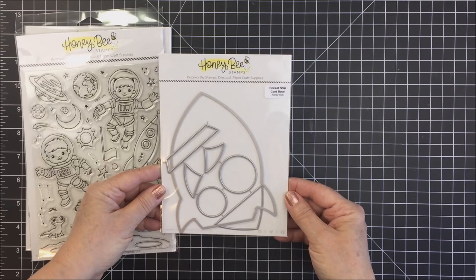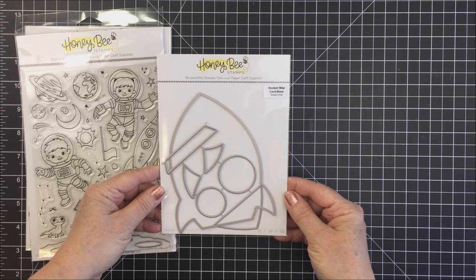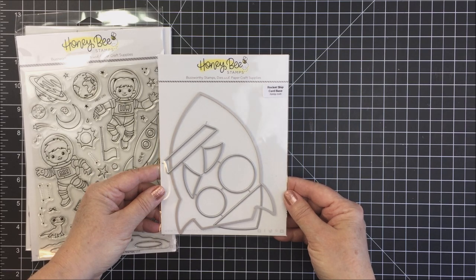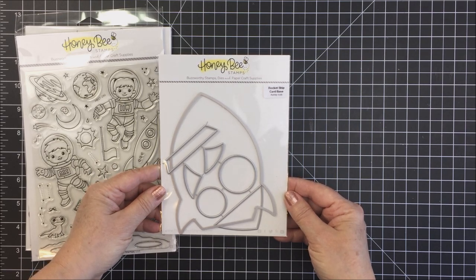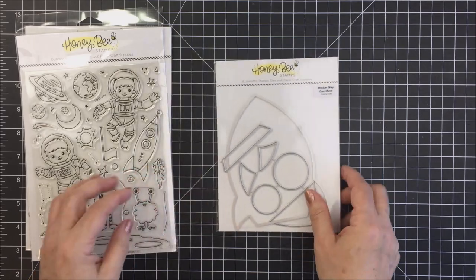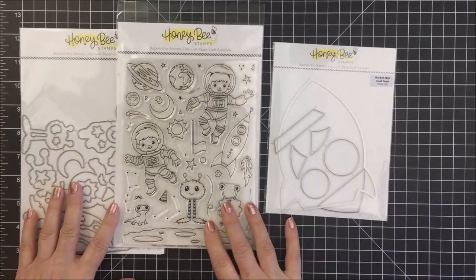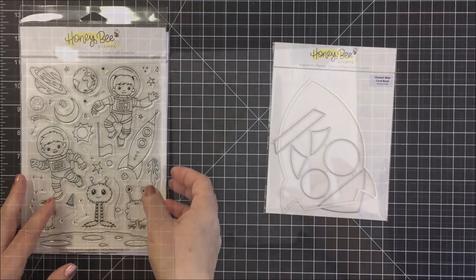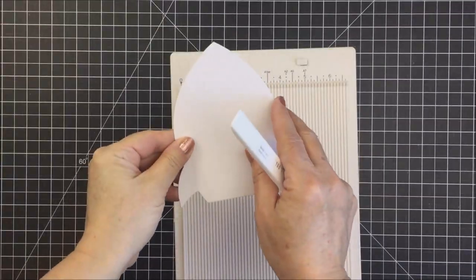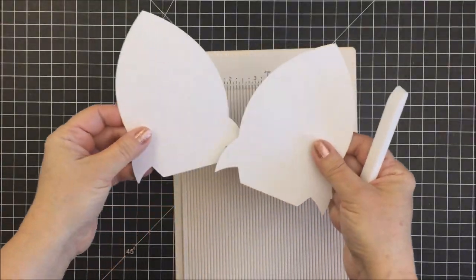I'm also going to be using this really adorable rocket ship card base, which I think is totally unique and very cool. You're going to see how I'm going to be using that die set for my card project. I am also going to be using another sentiment set and you'll see that later on in the video.